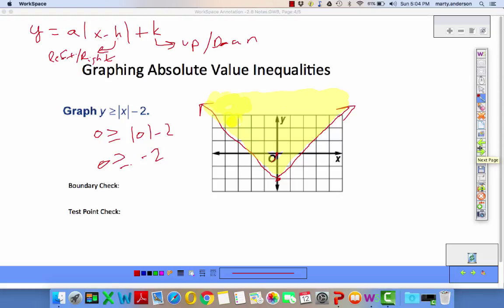Again, the boundary line is solid because it's or equal to. That means the points on the boundary are good to go, they're part of the solution. Check one if you want. Check two, zero. Is zero greater than or equal to zero minus 2? Is zero greater than or equal to the absolute value of zero minus 2? Zero is greater than 2, so we are good.